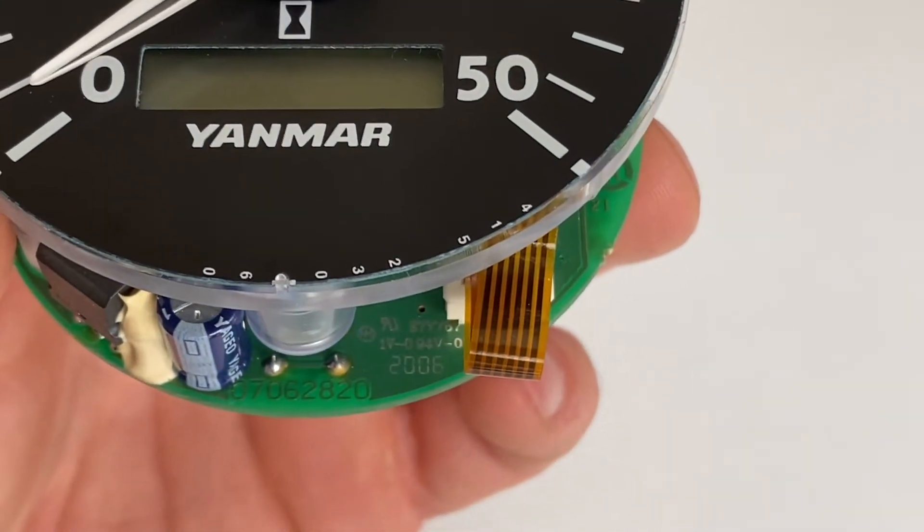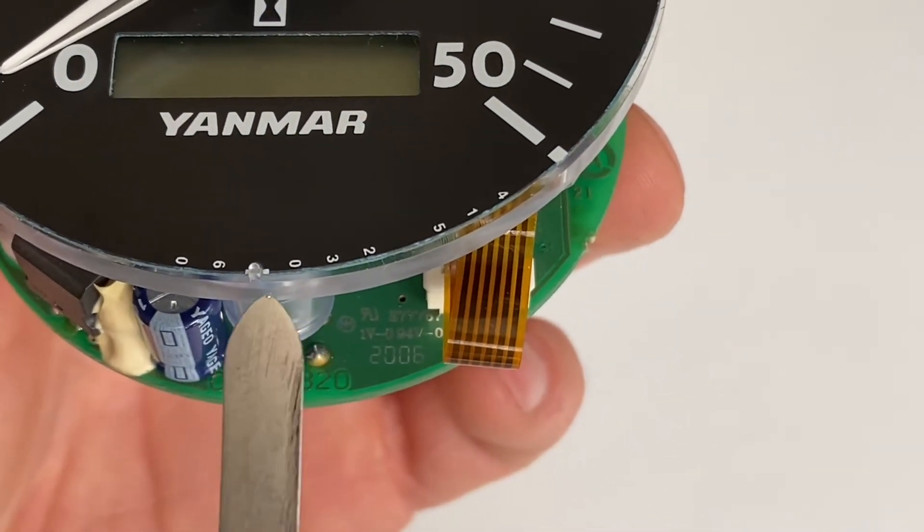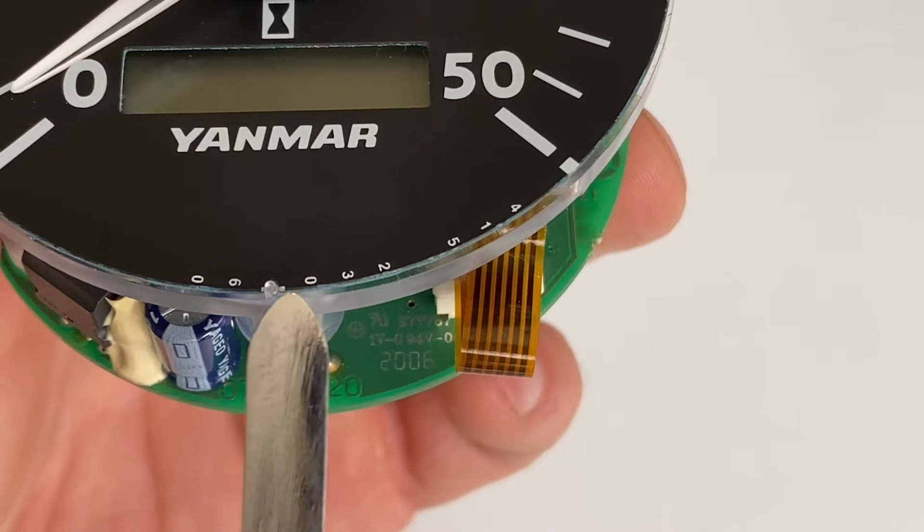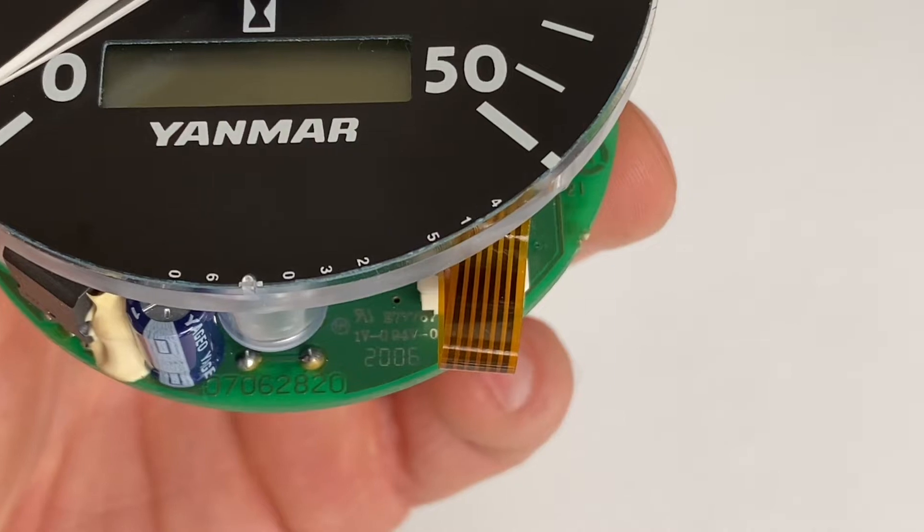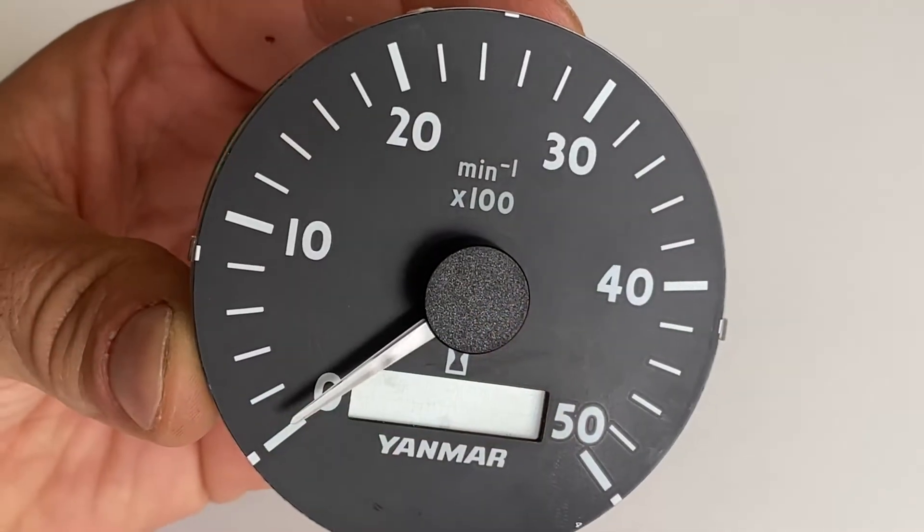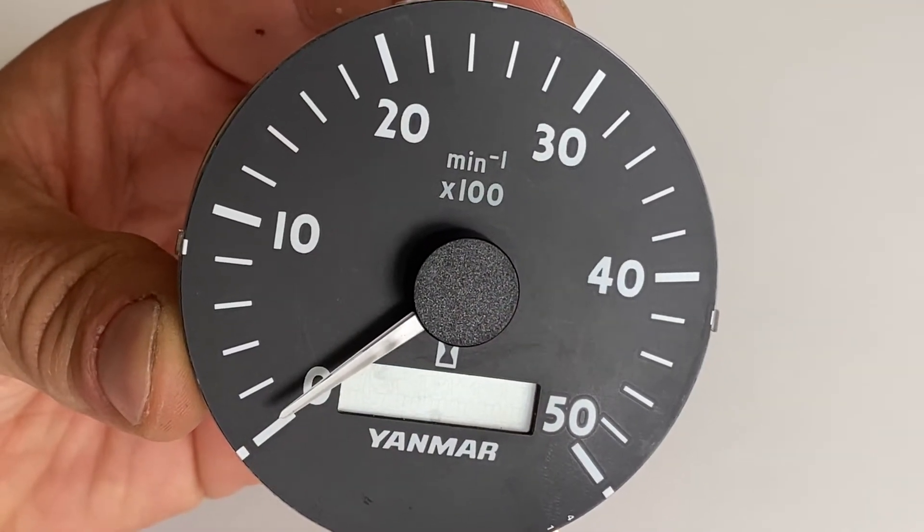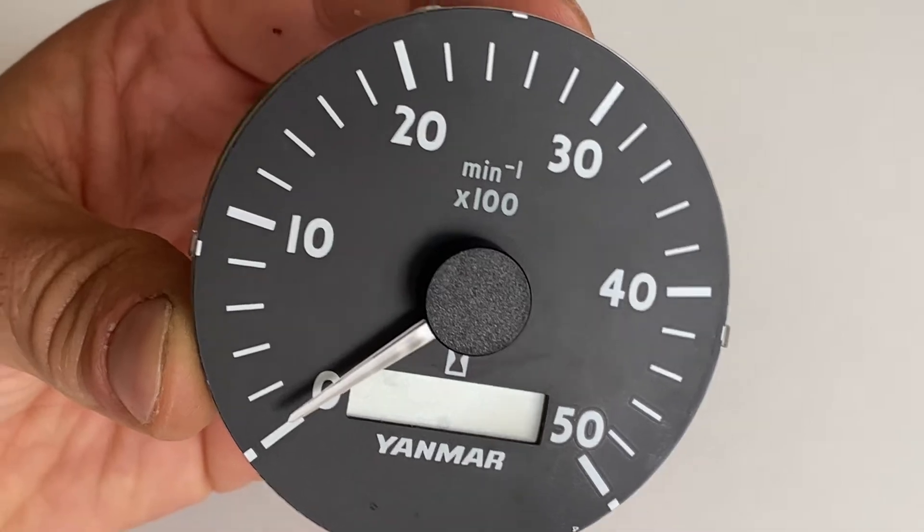Before we take anything apart, it's worth noticing the landmark right here. There's a notch inside your faceplate and there's a small piece of plastic that it fits into. This way, when you reassemble it, you won't have rotated the RPMs on the faceplate.